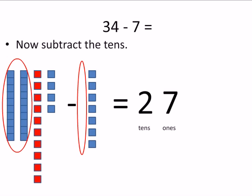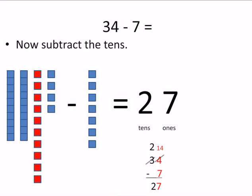2 minus 0, that's easy. 2, I mean. 2 minus 0 is 2. So we have 2 10s. So the answer is 27. Right? 34 minus 7 equals 27.